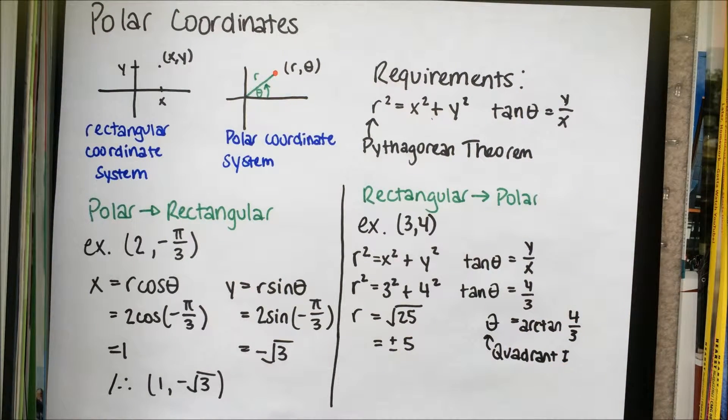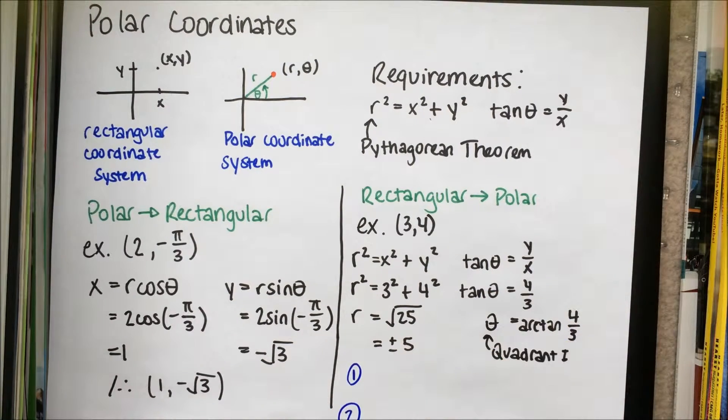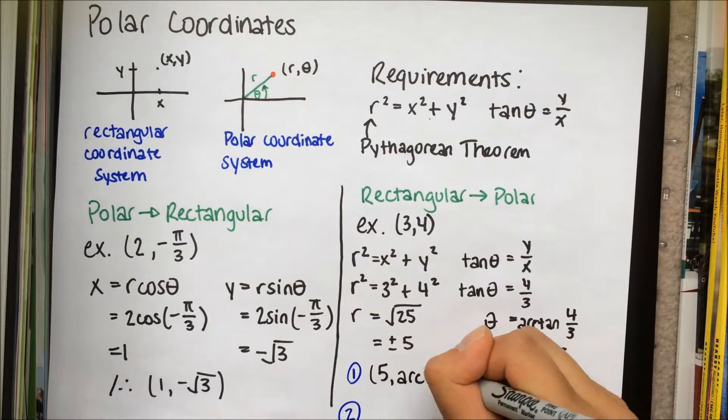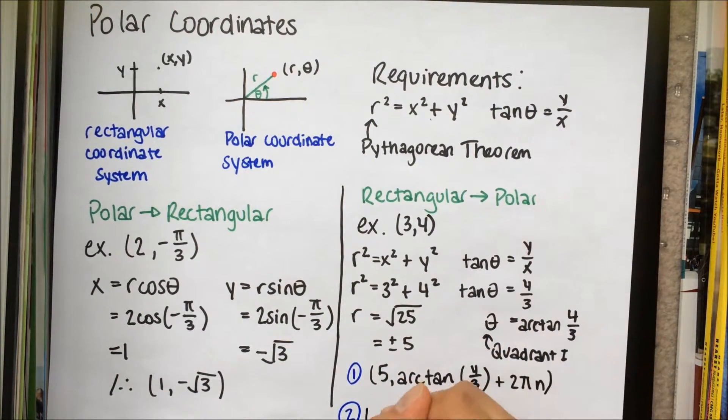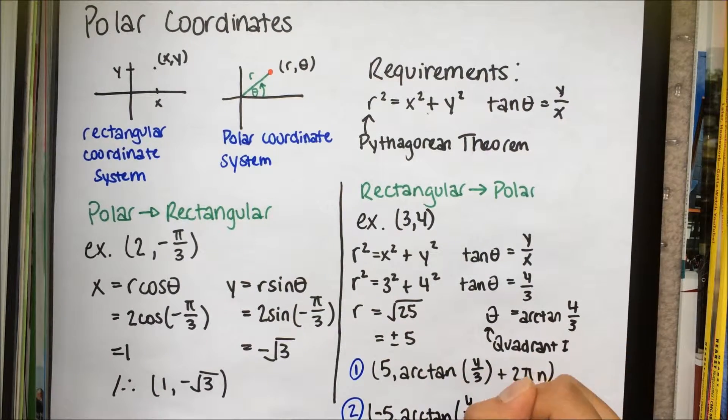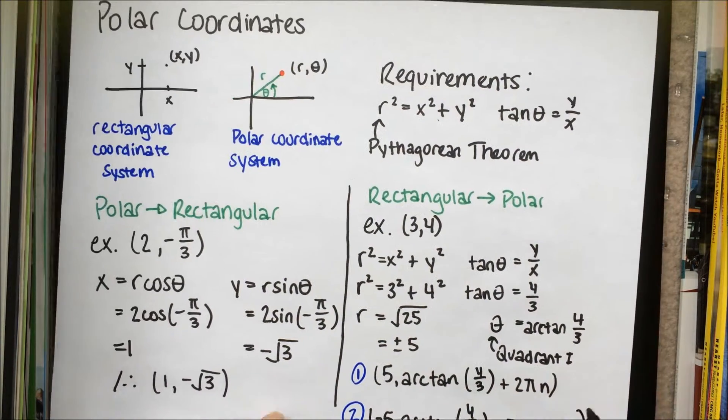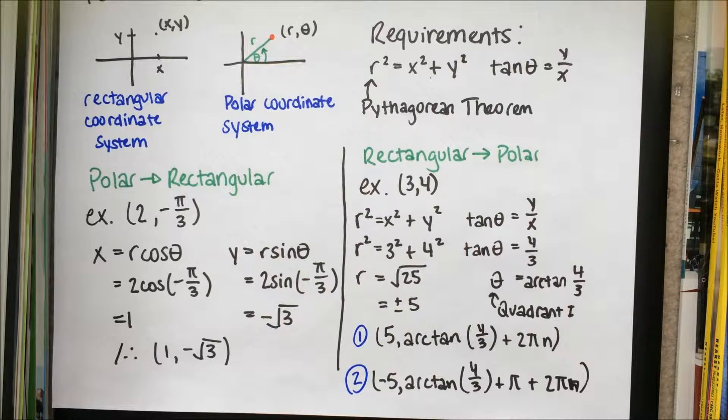There are two answers. In the first answer, theta is in the first quadrant, so it corresponds with the positive r value. In the second answer, the negative r value is pi radians away from the positive r value, which means that we must add pi to the original theta value.